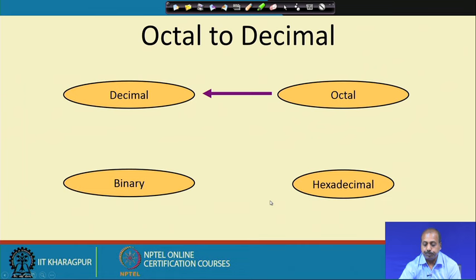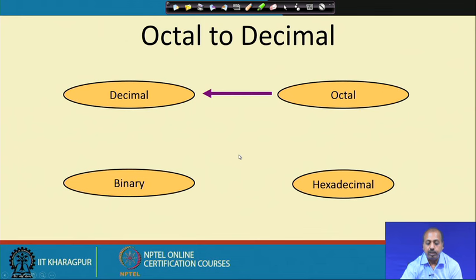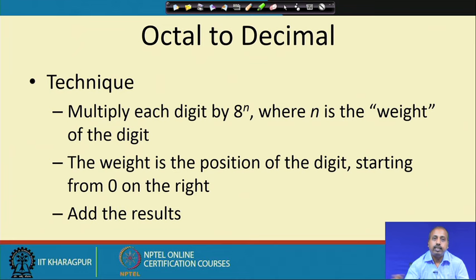Similarly, to convert octal to decimal, multiply each digit by 8 to the power n, where n is the position starting from 0 on the right, then add all results. For example, 724 base 8: 4 × 8⁰ = 4, 2 × 8¹ = 16, 7 × 8² = 448. Summing these gives 468 in decimal.